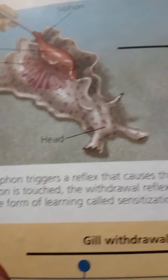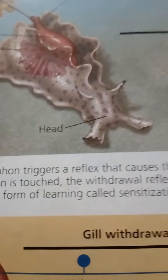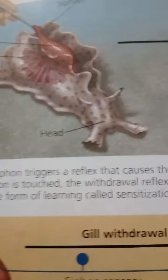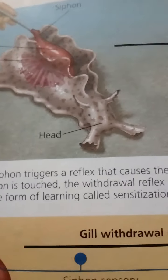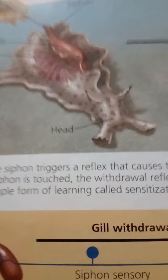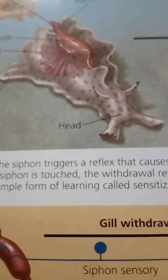LTP occurs when a presynaptic neuron produces a brief, high-frequency series of action potentials. Because LTP can last for days or weeks, it may be a fundamental process by which memories are stored or learning takes place.